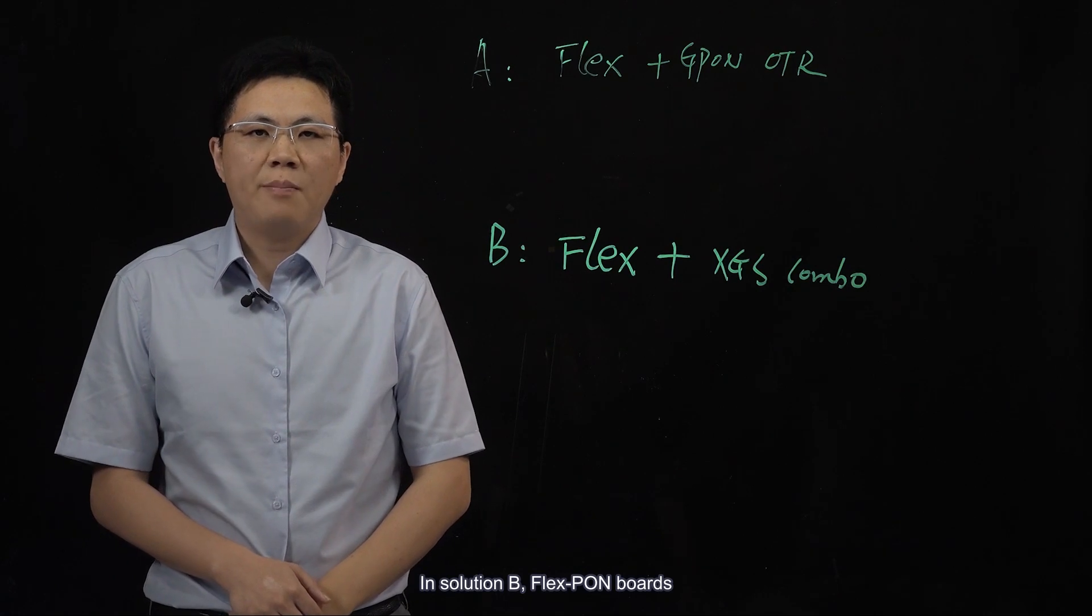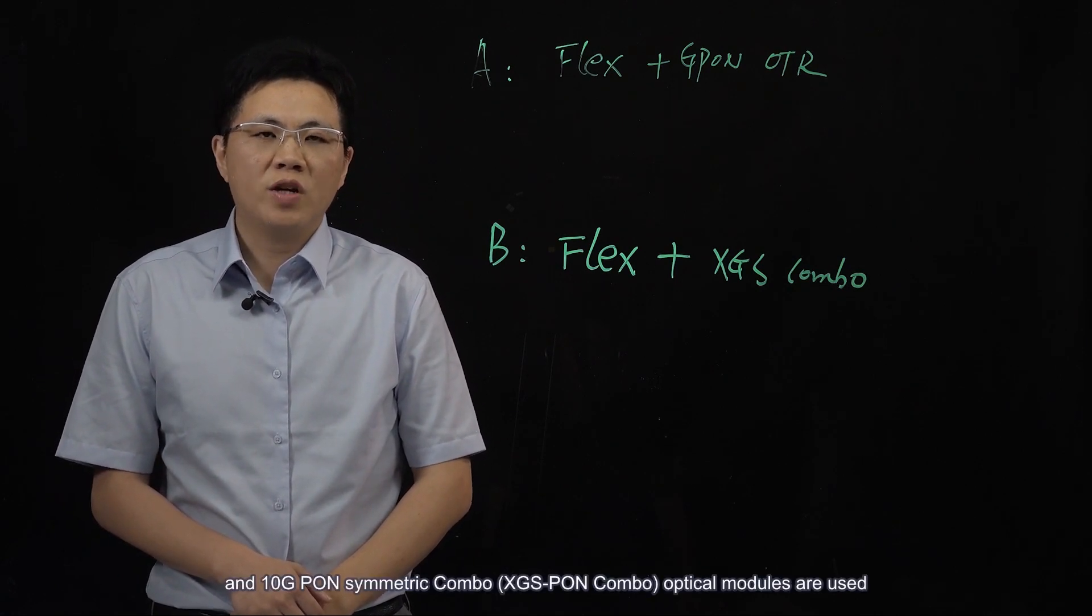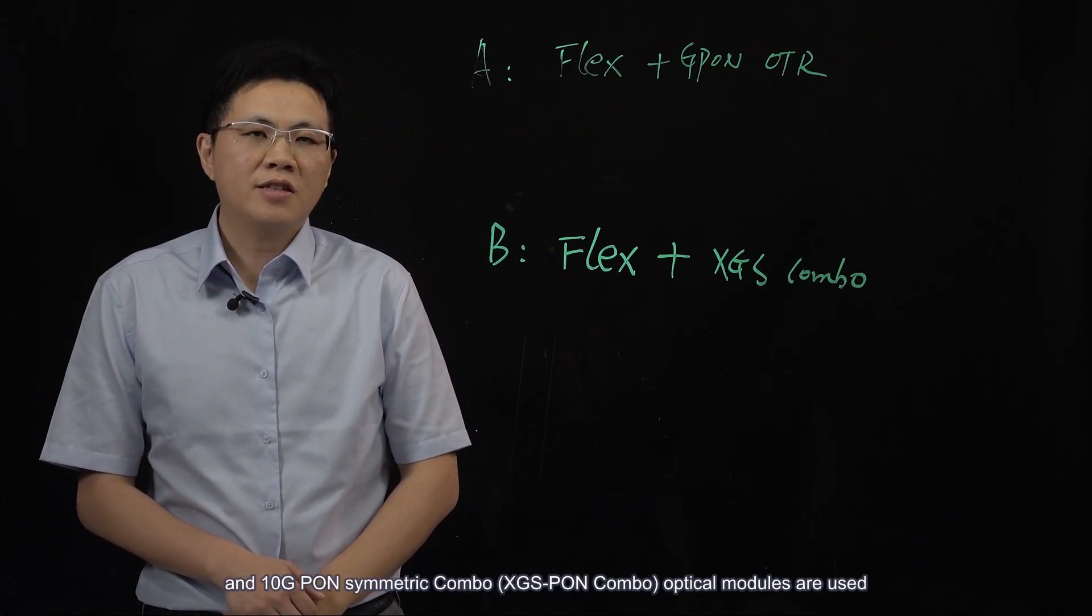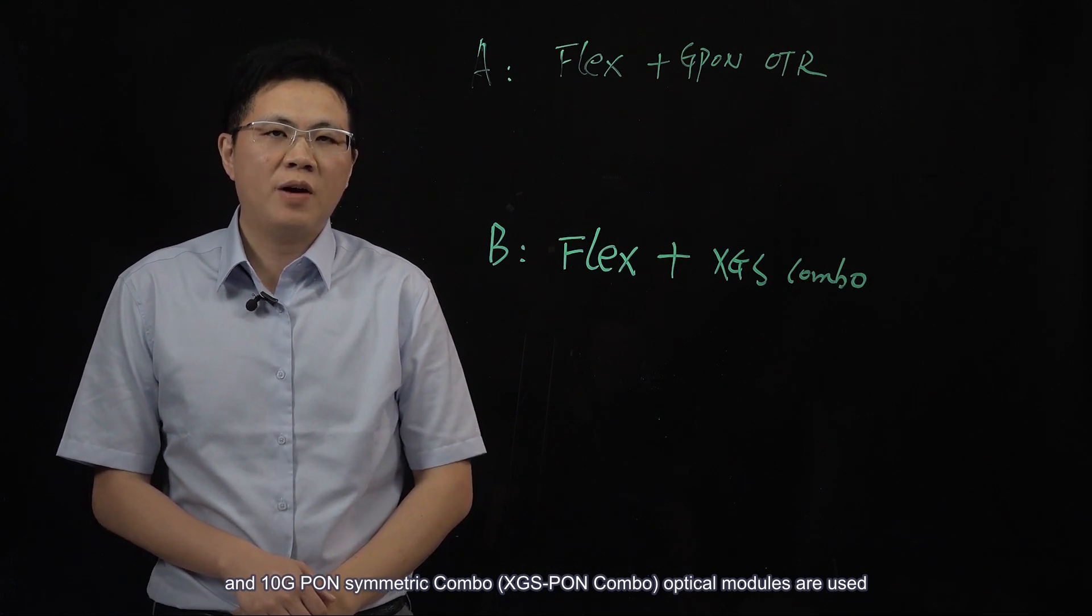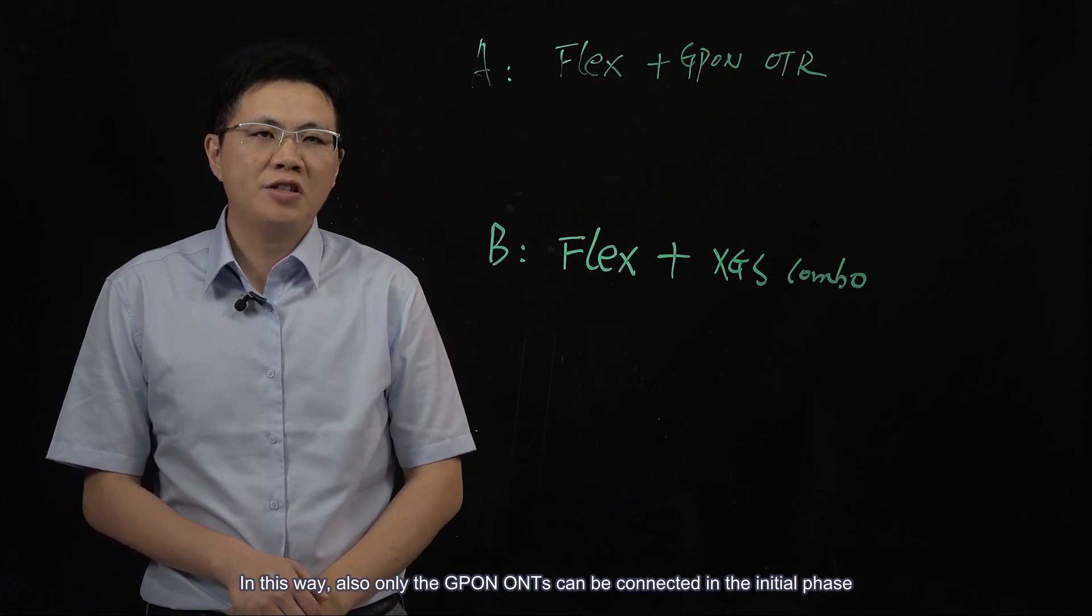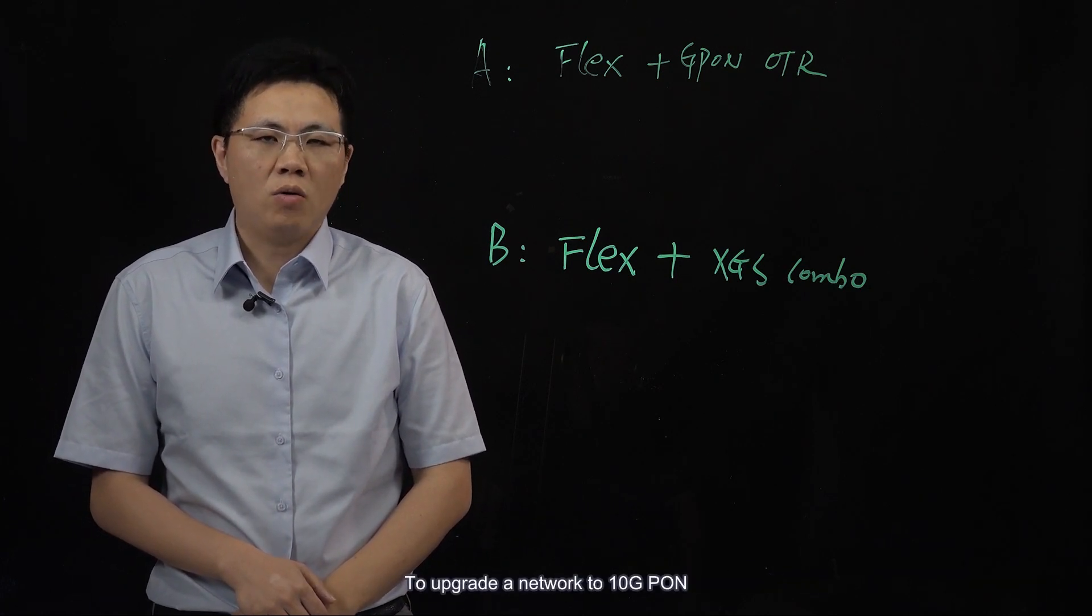In solution B, FlexPon boards and 10G-Pon symmetric combo, X-G-S-Pon Combo optical modules are used. In this way, also only the G-Pon ONTs can be connected in the initial phase.